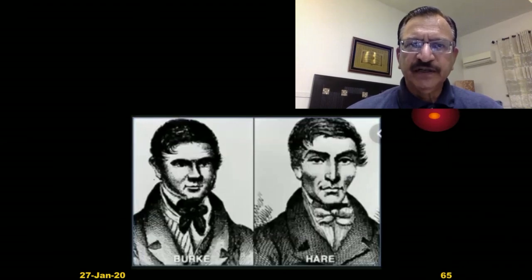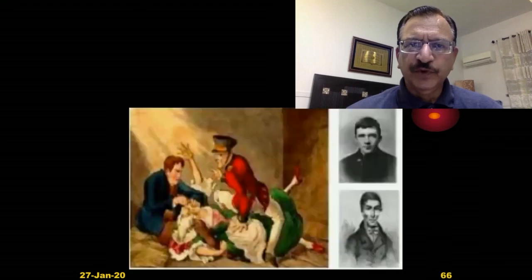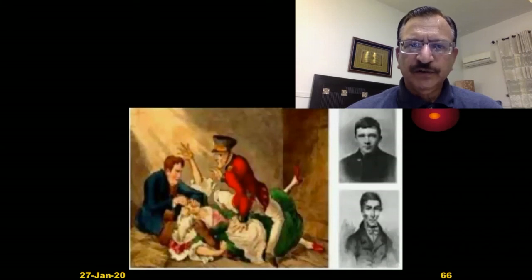Burke and Hare were two accomplices. This is a diagrammatic representation of how they used to carry it out.